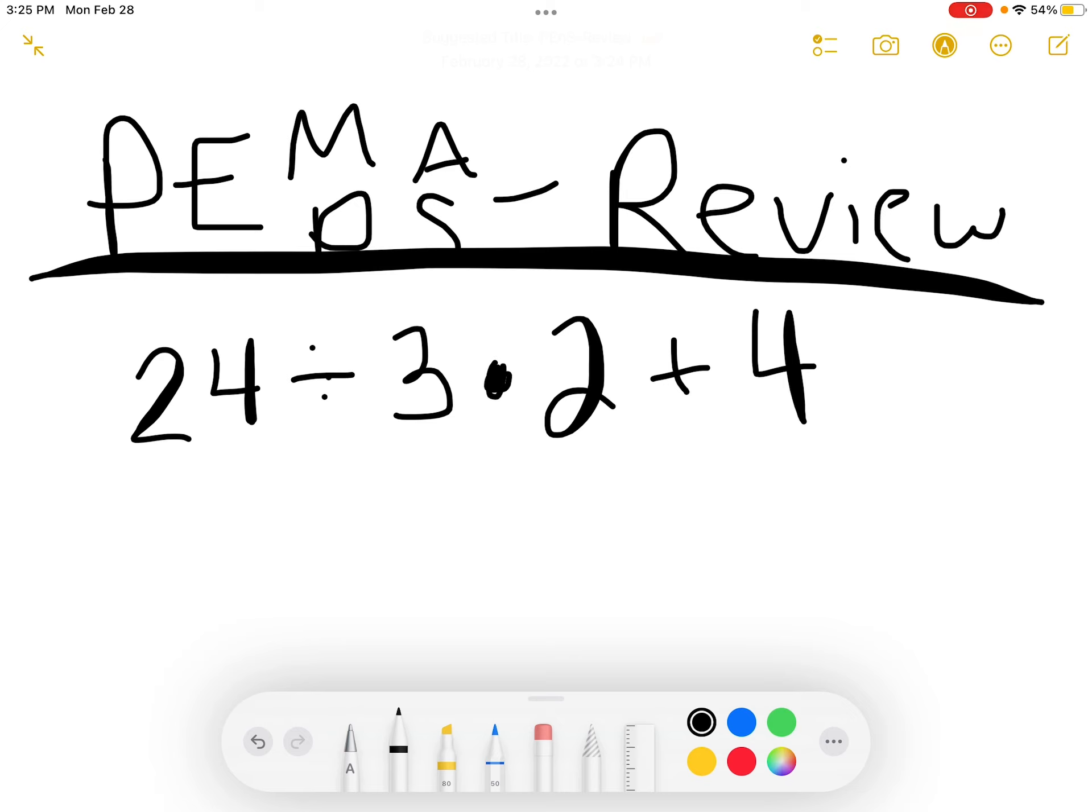We're going to start by asking ourselves, do we have any parentheses? We do not, so we move on to the next letter, E. Do we have any exponents? We do not, so we move on to the multiplication and division step. With multiplication and division, since we have both, we want to work with whichever one shows up first in our problem. Which one do you see that shows up first in our problem? The division. So we take care of the division first. 24 divided by 3, that gives us 8, and I continue to bring down the rest of my problem exactly as it was.